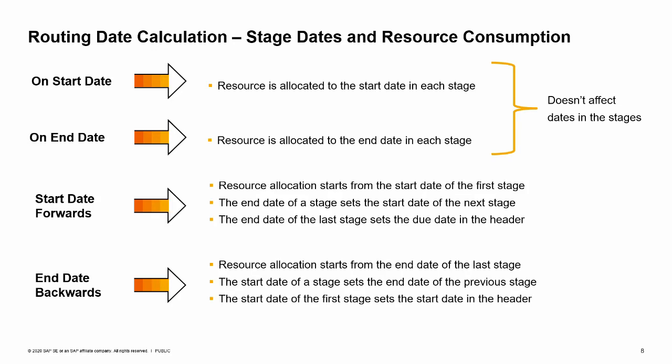The other two methods are more sophisticated. With the start date forwards method, the start date from the header is copied to the start date of the first stage. Then, if there is not enough capacity to meet the planned quantity of the resource, the system continues to allocate resource capacity in the coming days until all planned capacity is fully allocated. The end date of this stage is the last day of capacity allocation. The next stage's start date is the end date of the previous stage. When the last stage is reached, the end date is set to the header's due date. Note that capacity allocation is calculated from the beginning of the day.